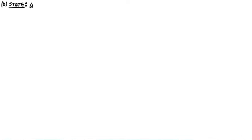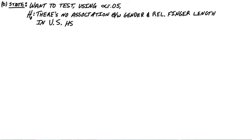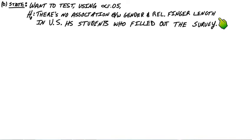Part B asks: do the data provide convincing evidence at the alpha equals 0.05 level of an association between gender and relative finger length for high school students in the U.S.? We're going to run a significance test. Starting with the state step, the null hypothesis says there's no association between gender and relative finger length for U.S. high school students who filled out the survey — they're completely independent.